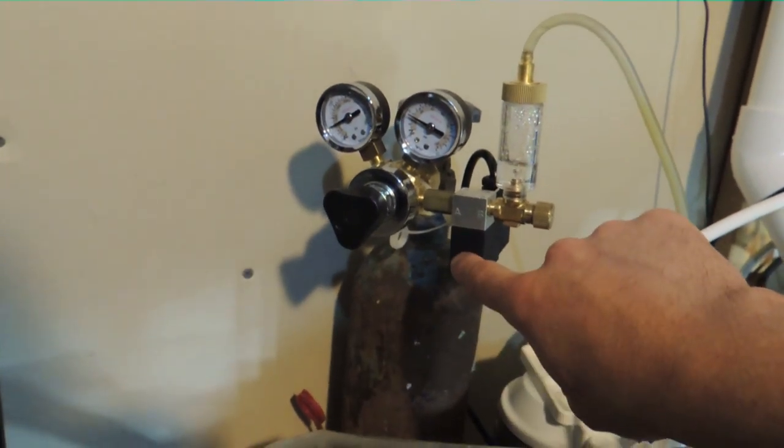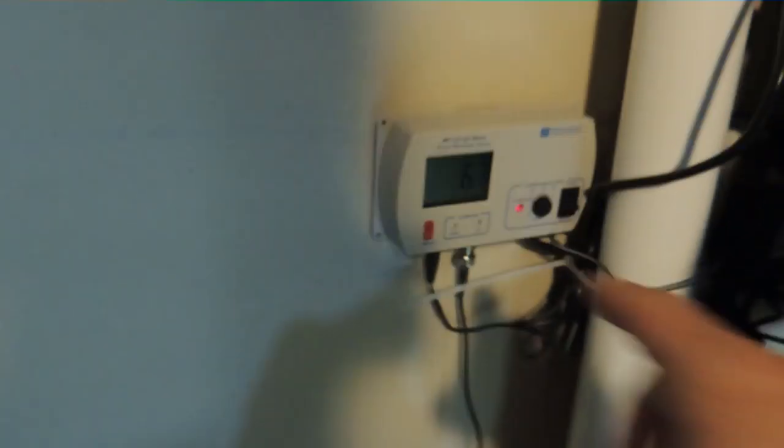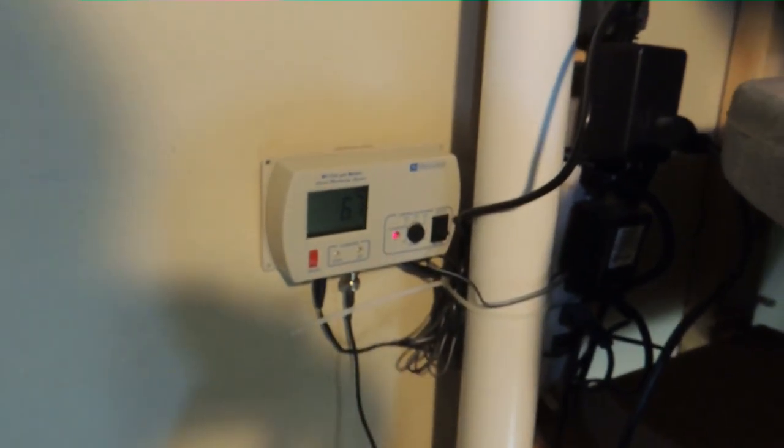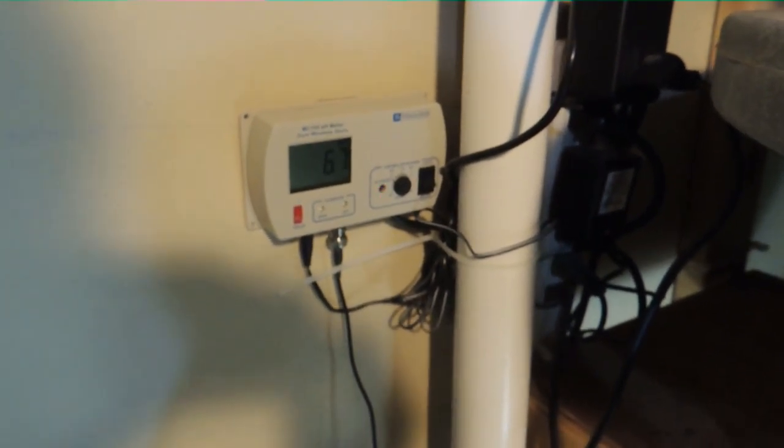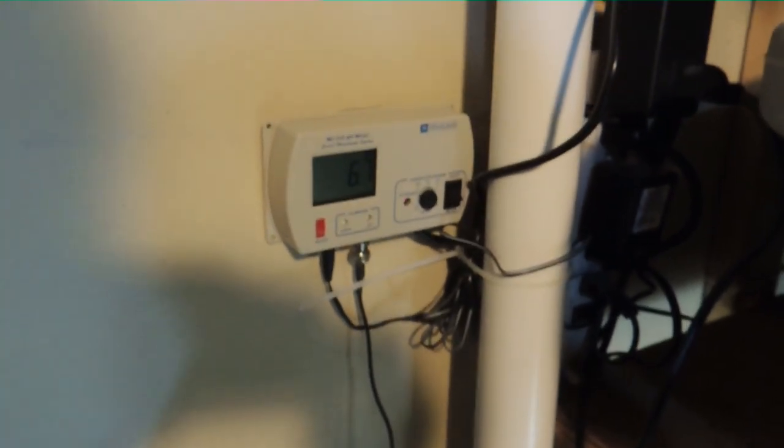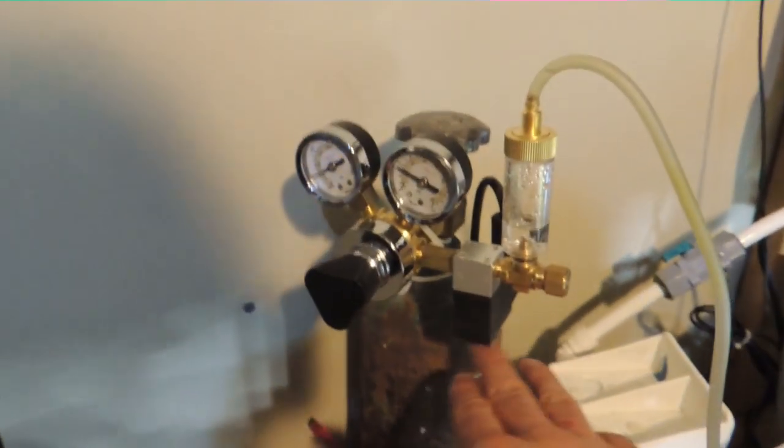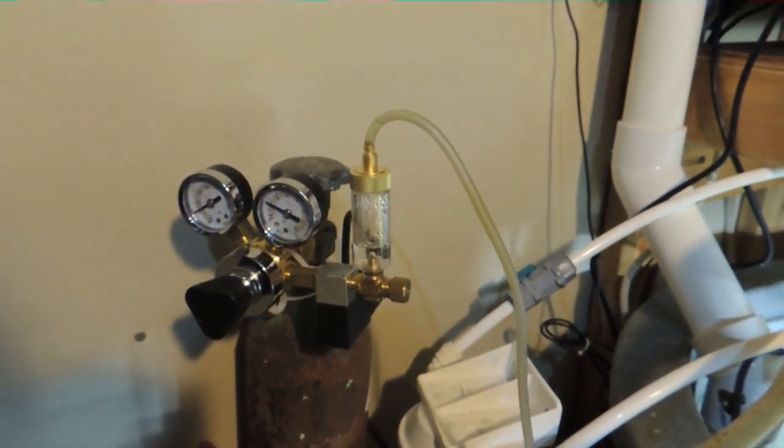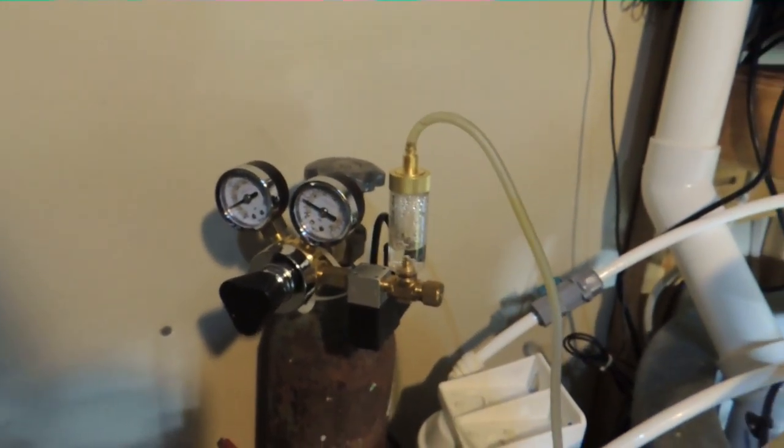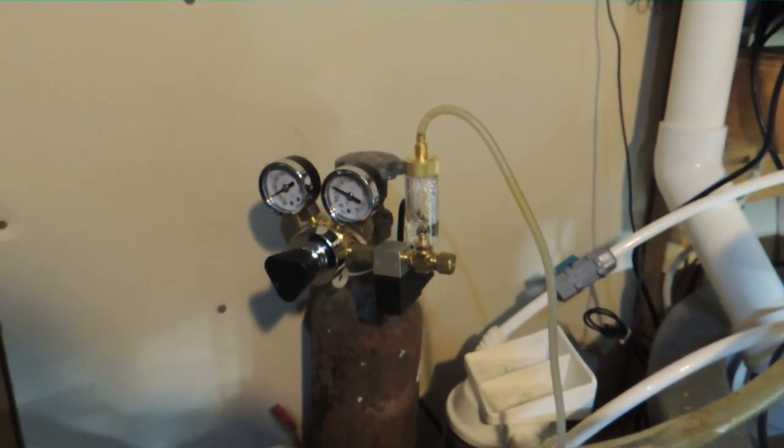And then this is your solenoid and this solenoid is controlled by this pH controller. This is the Milwaukee MC 122 pH controller and it seems to be working really well. Basically you just set your pH for where you want it to be. And if it goes above that, it turns this solenoid on, which puts the carbon dioxide into the calcium reactor. When your pH goes below what you have it set at, it goes ahead and shuts off and it just keeps your pH right about where you want it.